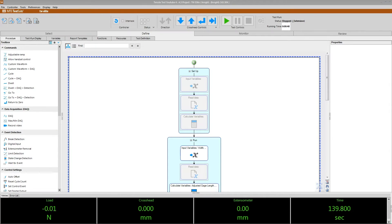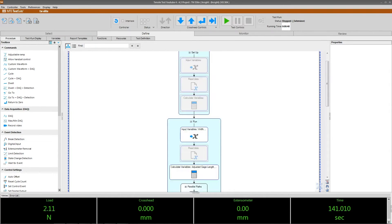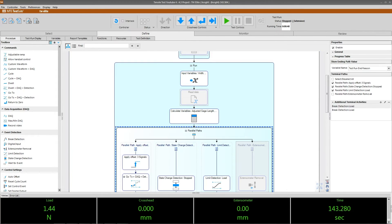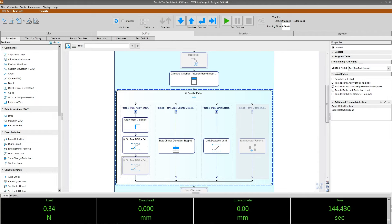Now that the test is set up, we have to set up the software. Today we will be using MTS Test Suite. We will be using the pre-made template EM Tension Simplified. Each of these boxes represents a command. As we work our way down the procedure, the command gets more and more complex using parallel paths for things like brake detection and data acquisition.